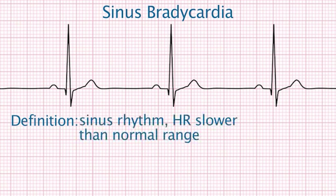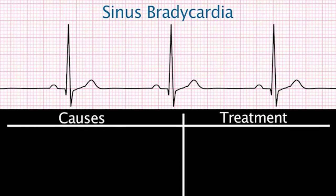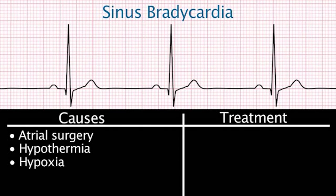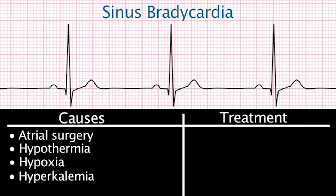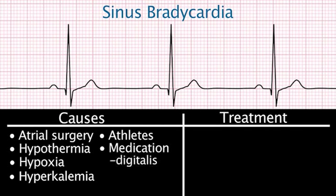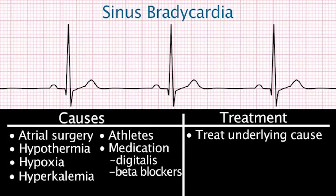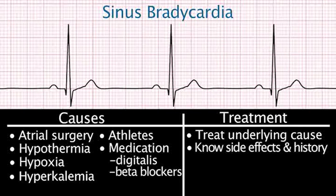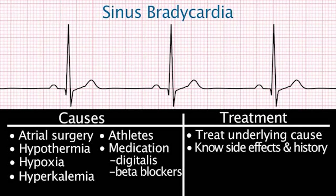Sinus bradycardia is a sinus rhythm where the heart rate is slower than the normal range for that age group. Causes include any surgical manipulation of the atria, such as atrial septal defect or atrioventricular canal repairs, hypothermia, hypoxia, hyperkalemia, trained athletes, and medications such as digitalis and beta blockers. Treatment generally is to treat the underlying cause. It is important to know the side effects of medications and the surgical procedures of your patient.